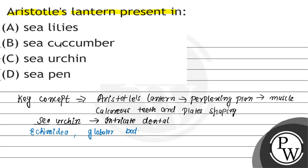Sea urchin belongs to phylum Echinodermata. It has a globular body plan and radial symmetry. Sea lilies also belong to Echinodermata and resemble a plant or tree. They live in the deep ocean, so Aristotle's lantern doesn't apply to them — so sea lilies is wrong.